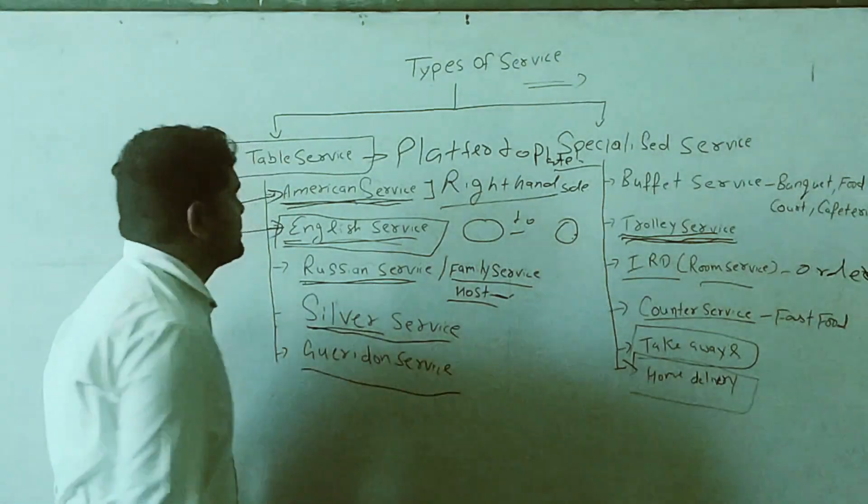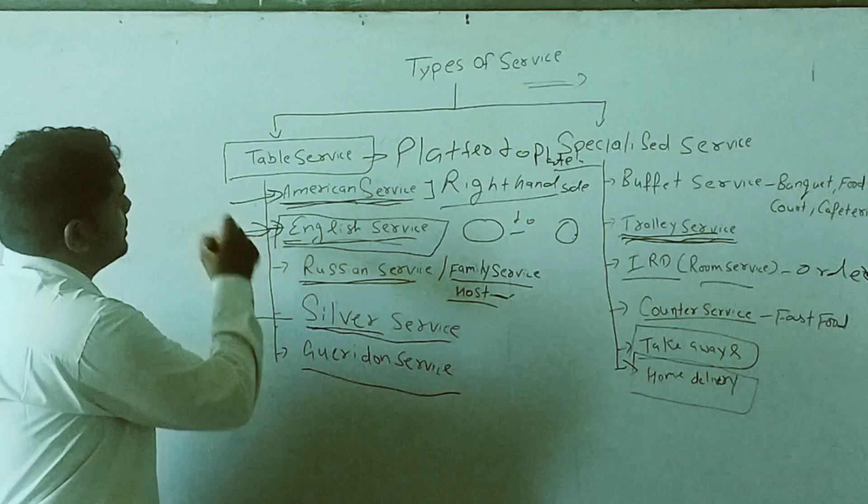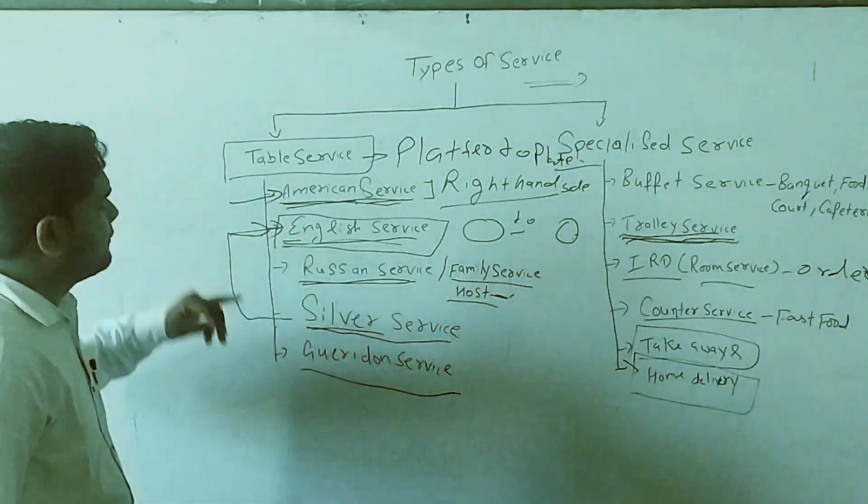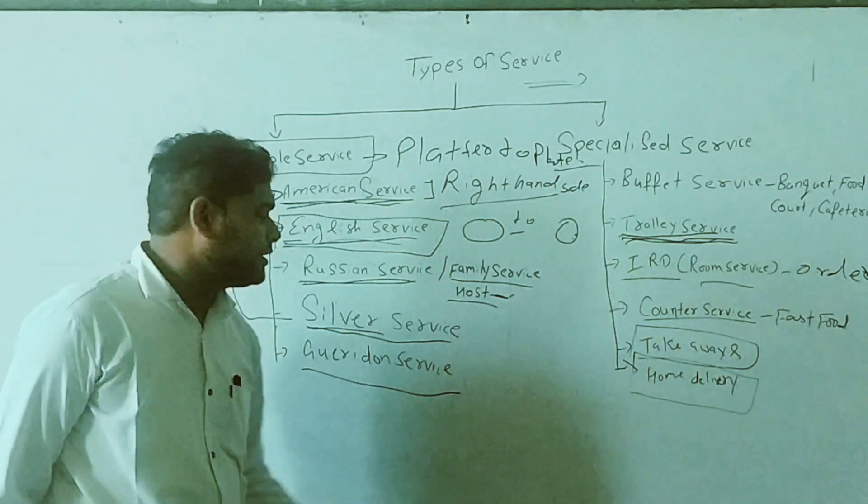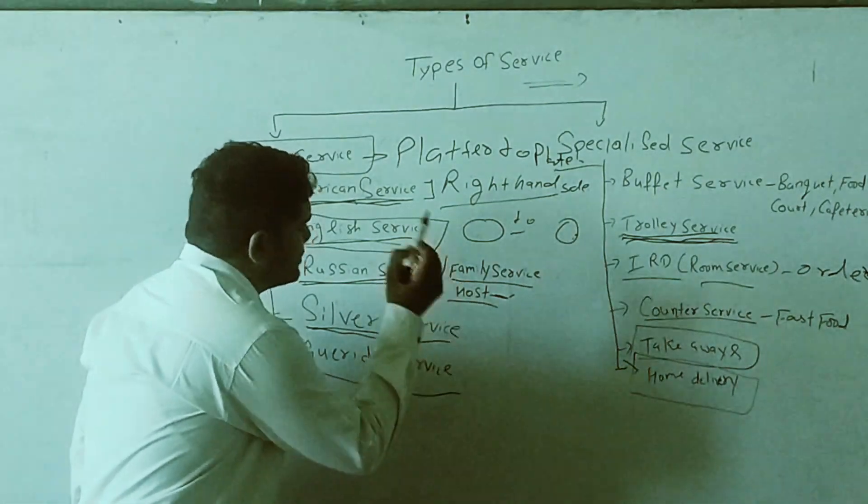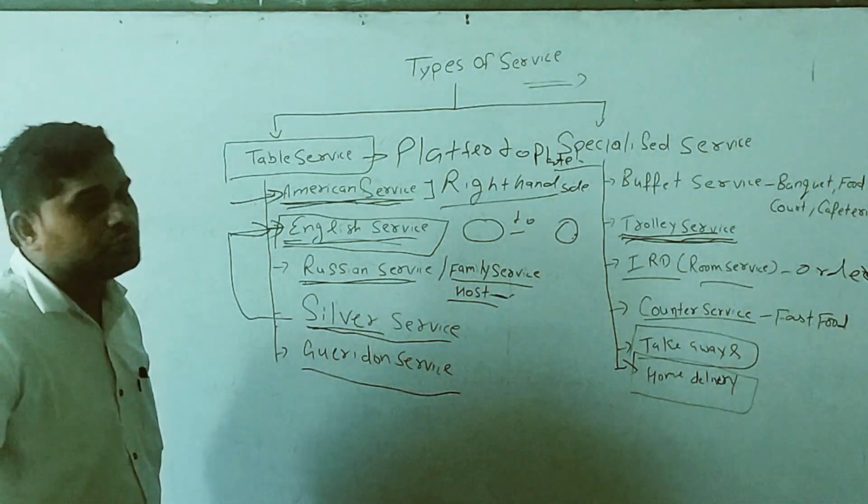Next one is silver service. The silver service is same as English service. All the food is served from the platter to plate on the guest table. Only the difference is that only silver utensils are used.